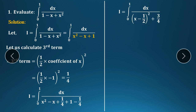The denominator needs to be written in a minus b whole square form. To do this: take the square root of x², which is x, and the square root of 1/4, which is 1/2. The sign between them is minus. So we get (x − 1/2)². Plus: 1 − 1/4 = 3/4, so the denominator becomes (x − 1/2)² + (√3/2)².